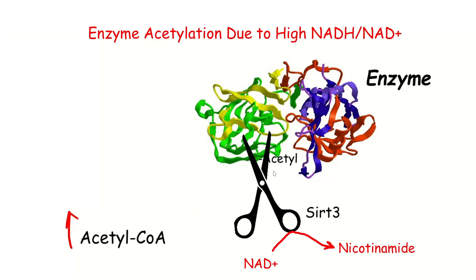The enzymes that come along and take these acetyl groups off are the Sirtuin family — Sirt1 and Sirt3 — known as NAD+-dependent deacetylases. Their job is just to take these acetyl groups off, like a pair of scissors. But the catch is they can only take the acetyl groups off if they have NAD+ availability. And of course, the reason more acetyl groups were sticking in the first place is that we don't have a lot of NAD+ around.